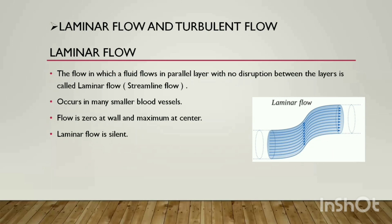Next is laminar flow and turbulent flow. Laminar flow is a type of flow in which the fluid moves parallel to itself with no disruption between layers. As seen in the diagram, blood flows in parallel with no disruption between fluid layers. This type of flow occurs in small blood vessels. Near the walls the flow rate is zero, while at the center it is maximum.